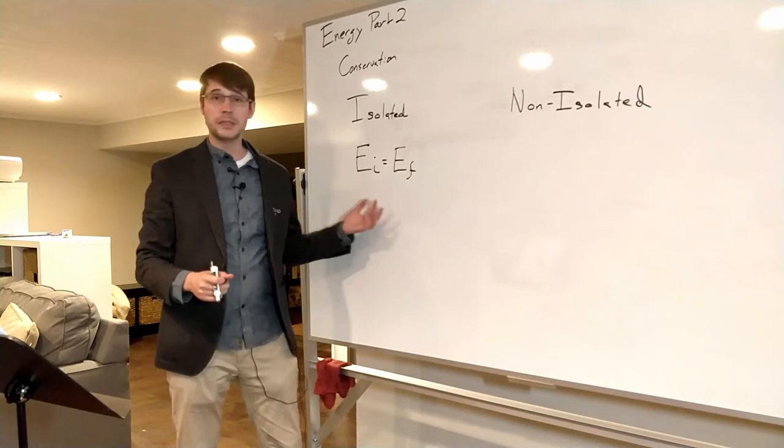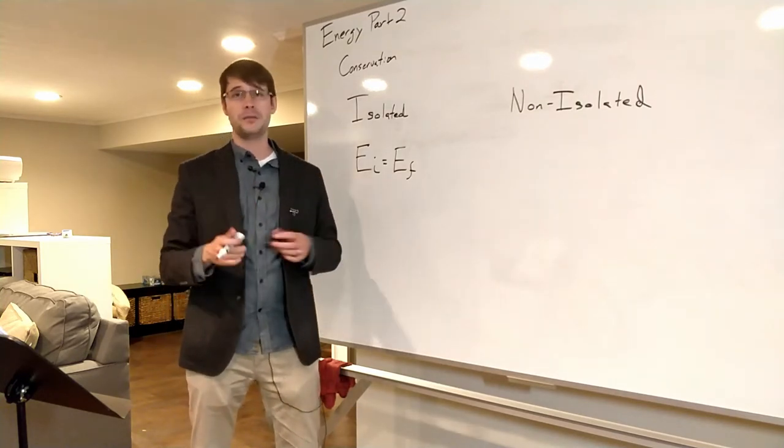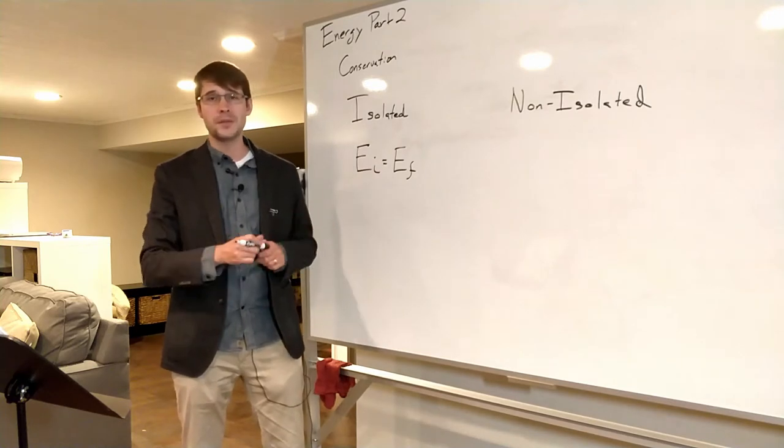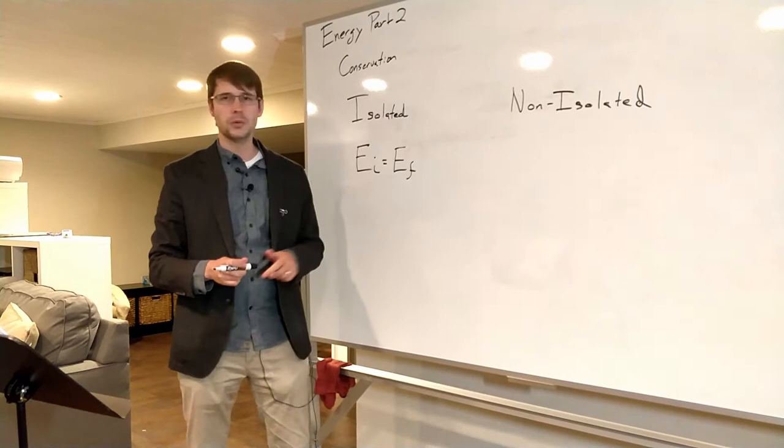So we get that the initial energy is equal to the final energy, and we can write the sum of all the initial energies—all the different types of energy for every single object added up—is going to be equal to this.